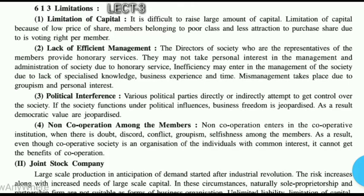Point four bol raha hai: non-cooperation among the members. Jitne bhi members hain, agar sab cooperative nahi honge — naam vise iska cooperative hai, but agar woh cooperative nahi honge — toh koi doubt hoga, discord hoga, conflict hoga, ya phir koi groupism ban gaya, ya selfish person aa gaya beech mein. Agar sab log common interest ke liye kaam nahi kar rahe, toh jo bhi cooperation se unhein benefit milna chahiye tha, woh nahi milega. Ye ek doodhari talwar hai — cooperative members honge to flourish, nahi honge to downfall. Toh ye char bade limitations hain cooperative society ke: limited capital, inefficient management, political interference, and non-cooperation among the members.